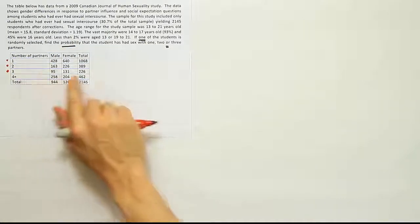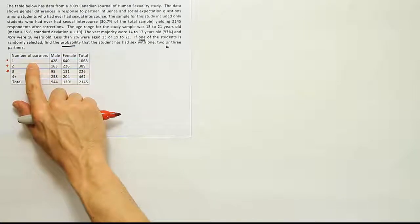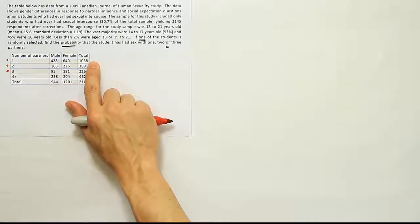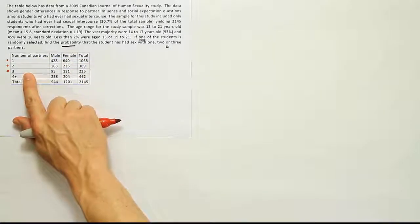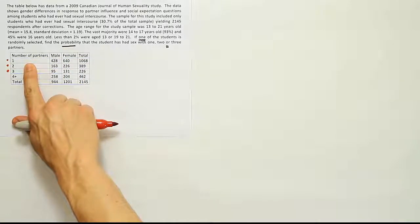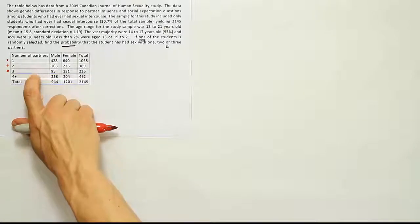You cannot be a member of the three partner category and also be a member of the one partner category. People have either had sex with three people in their past or they've had sex with one person in their past. They can't be in both categories.